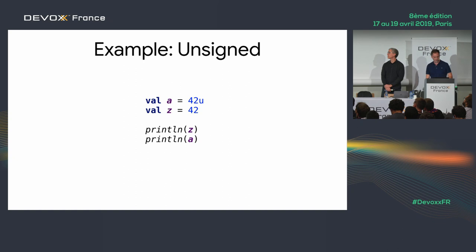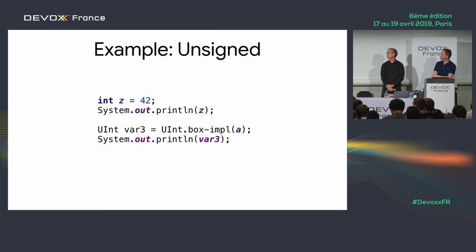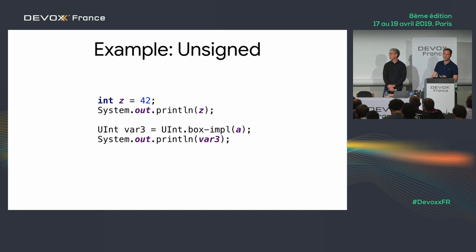One gotcha with unsigned numbers: when converting to strings, the compiler first calls a static method box-impl that returns a new instance of the UInt class, then calls the generic version of print that takes an Object — because toString needs to know the number is unsigned. So boxing will happen in that context, and there are other gotchas with inline classes we'll see shortly.